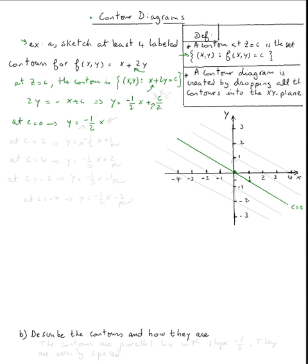Now, at c equal, again I'm not going to choose c equal one. I'm going to pick two, just so I don't have fractions for the y intercept. So if you plug in c equal two, you get y equal negative one half x plus one. Now the y intercept is one.